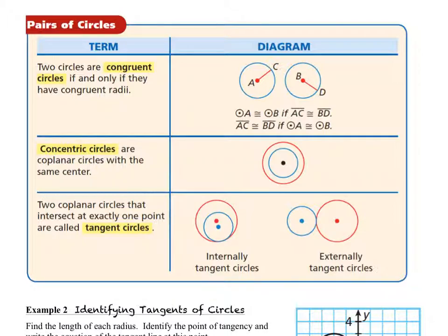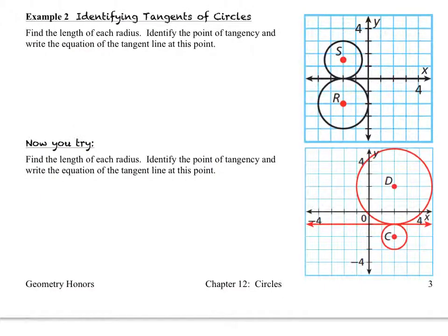Next, let's take a look at example two. In example number two, we want to identify tangents of circles. So we want to find the length of each radius of each of the two circles in each of the two diagrams, identify the point of tangency, and then write the equation of the tangent line where the two circles intersect, the line that goes between the two circles.